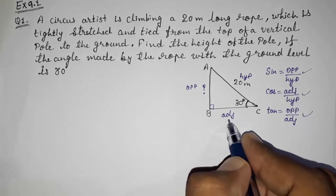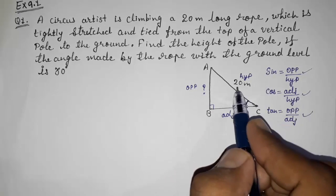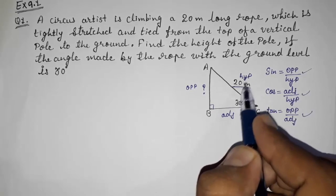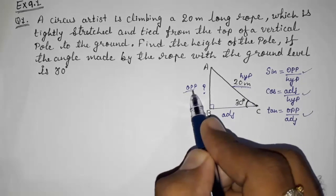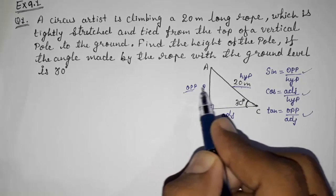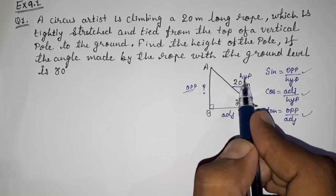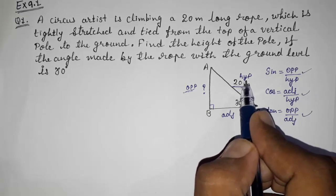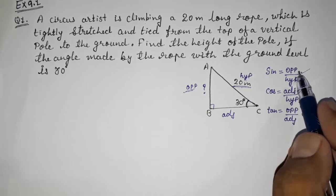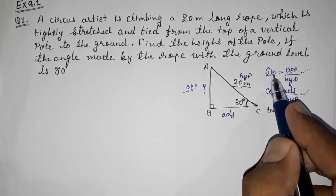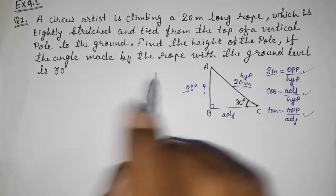Now we are having 20 meters, means we are having hypotenuse 20 meters, and we want to find out opposite AB. So opposite we want to find out, hypotenuse we are having. Look here, opposite and hypotenuse is in sine, so we are going to use sine here.